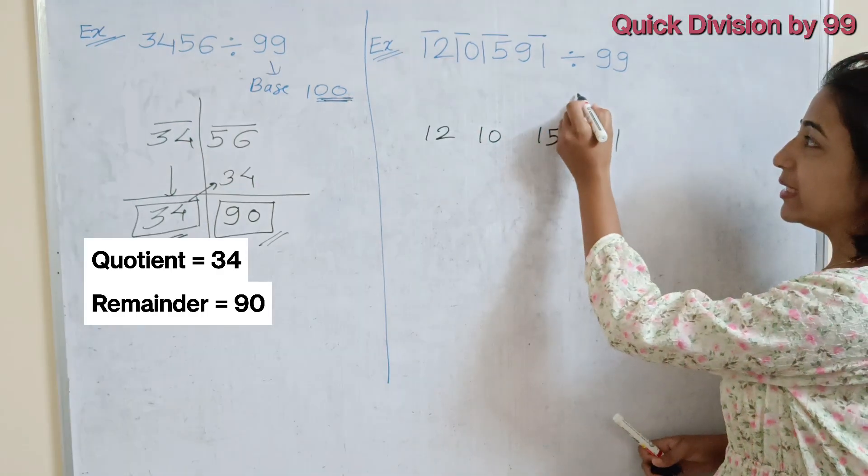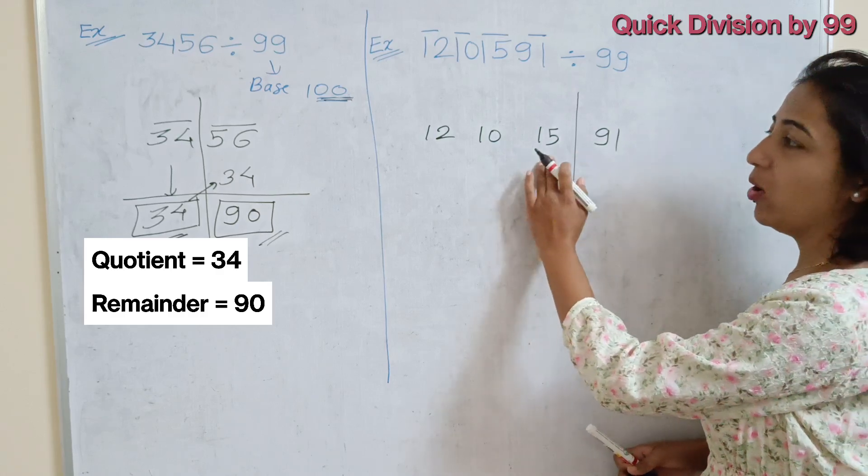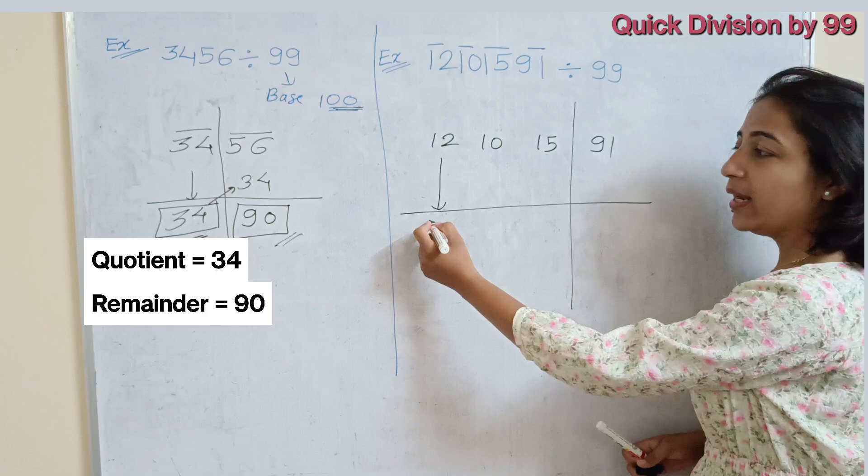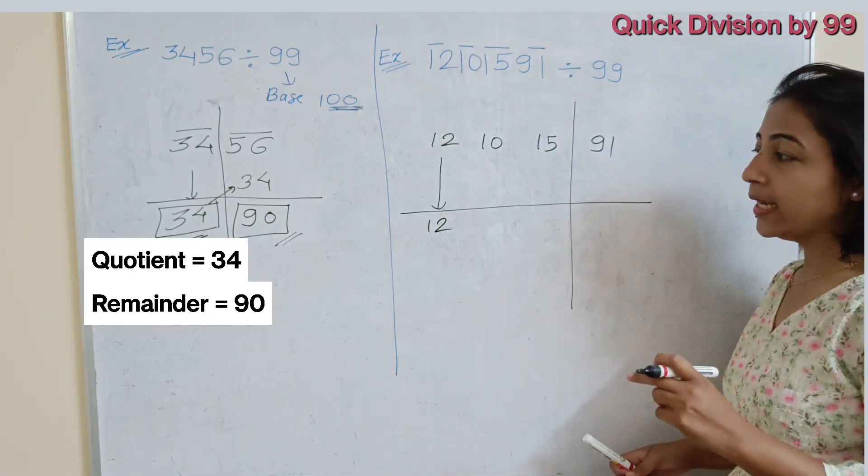Now, we have to break this number in two parts. In the right hand side, two digits and remaining all are in the left side. In the first step, we have to take this 12 as it is. Otherwise, we have to take first pair as it is.